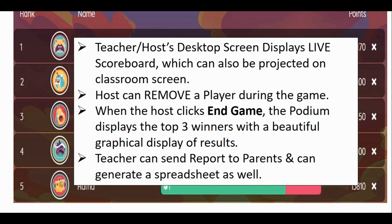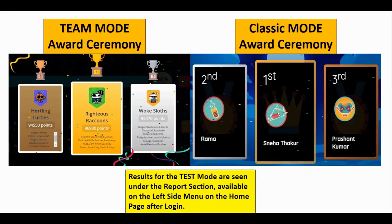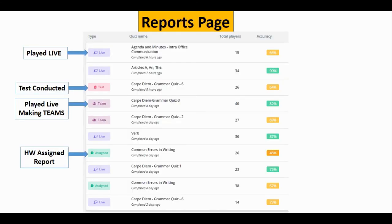A few instructions to remember: the teacher or host's desktop screen displays the results and scoreboard. You can remove any player during the game if there is an error, and they can rejoin. The top three winners are displayed in a virtual prize distribution ceremony. Reports can be sent to parents and generated as a spreadsheet. In team mode, the award ceremony happens and the quiz is visible on the right-hand side while it's running, displayed to all players.